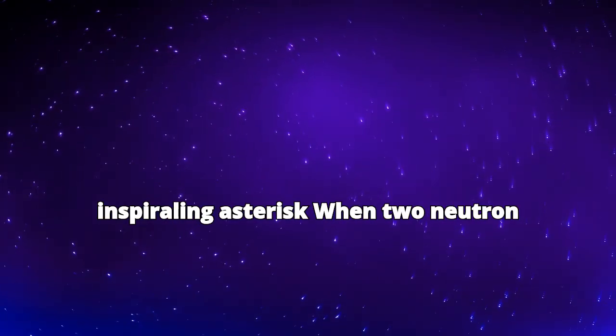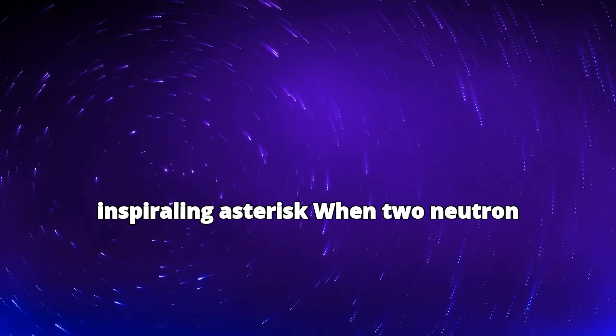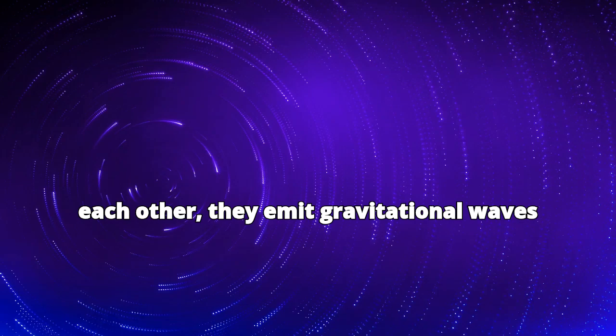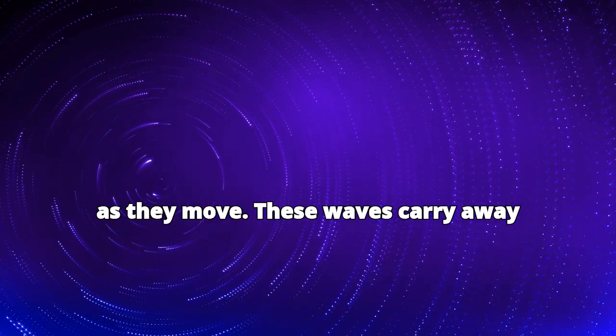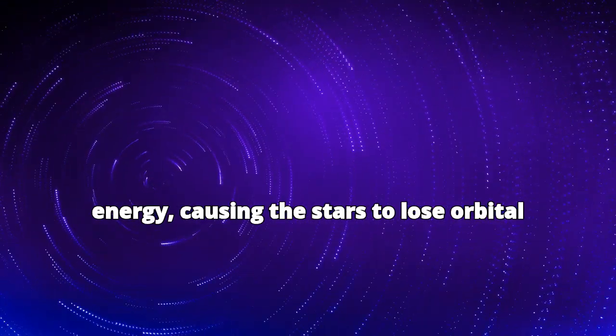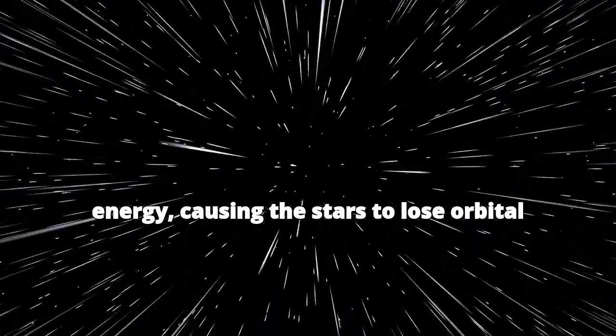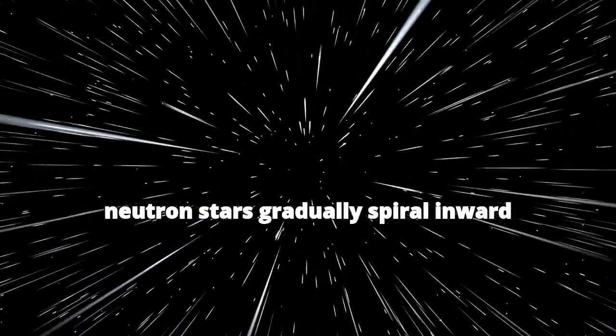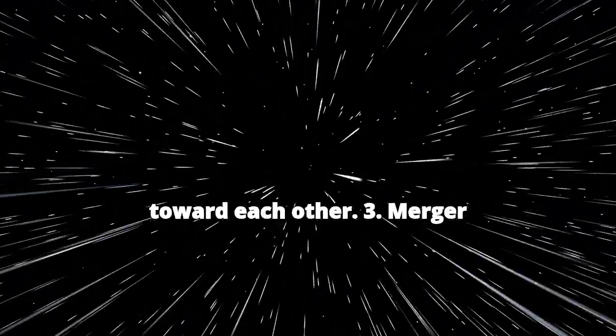When two neutron stars exist in a binary system, orbiting each other, they emit gravitational waves as they move. These waves carry away energy, causing the stars to lose orbital energy. Over millions of years, the neutron stars gradually spiral inward toward each other.